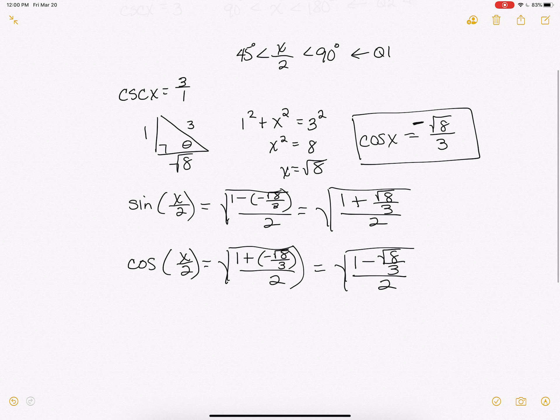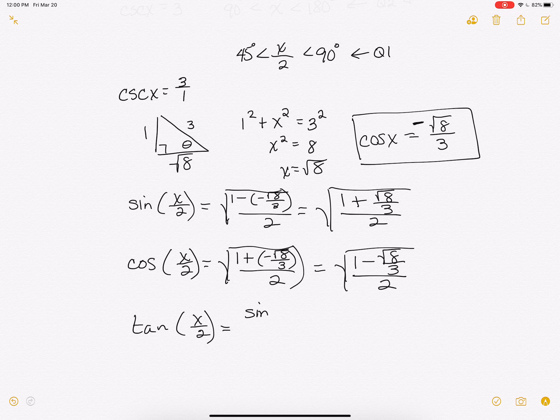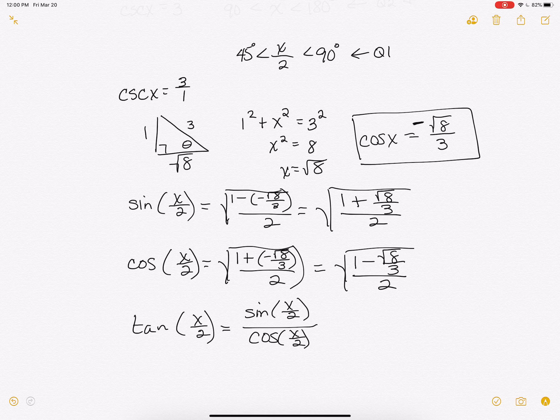tangent, and this does scroll up, so that our tangent of x over 2 equals my sine of x over 2 over the cosine of x over 2.